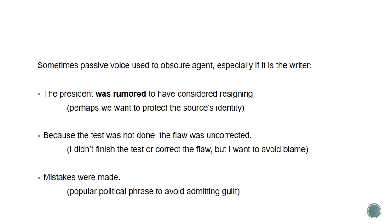Sometimes passive voice can be used to obscure the agent, especially if it's the writer — this can be a way to avoid liability. 'The president was rumored to have considered resigning' — perhaps we want to protect the source's identity. 'Because the test was not done, the flaw was uncorrected' — I didn't finish the test or correct the flaw, but I want to avoid blame by just saying these things happened rather than admitting I didn't do what I was supposed to. And finally, 'Mistakes were made' — an extremely popular political phrase, a way to avoid admitting guilt, as if these things happened on their own without the active choice of a politician or official.